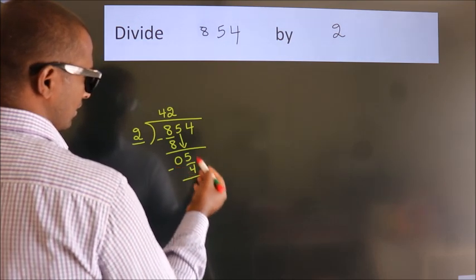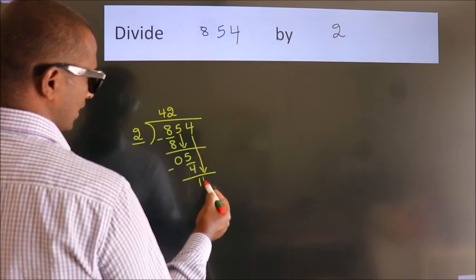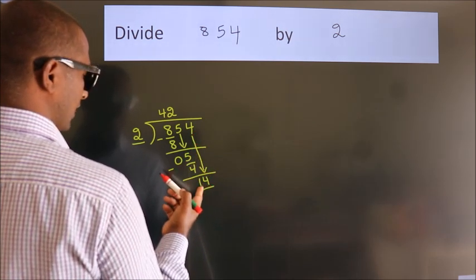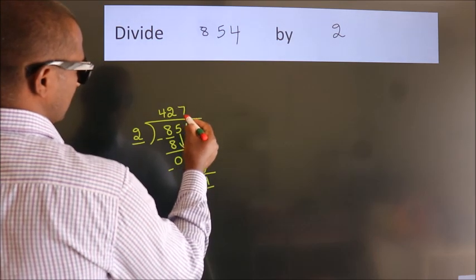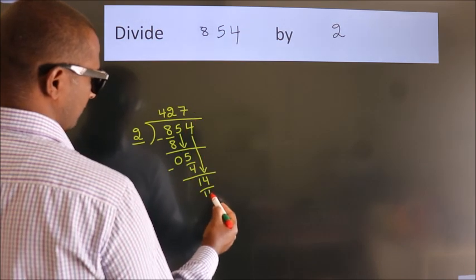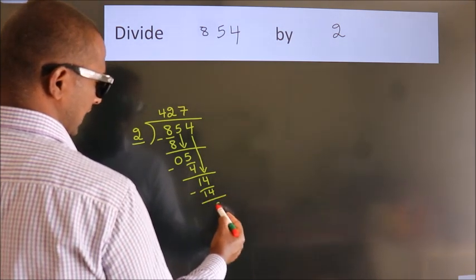After this, bring down the next number. 4 down. So, 14. When do we get 14 in the 2 table? 2 sevens, 14. Now we subtract. We get 0.